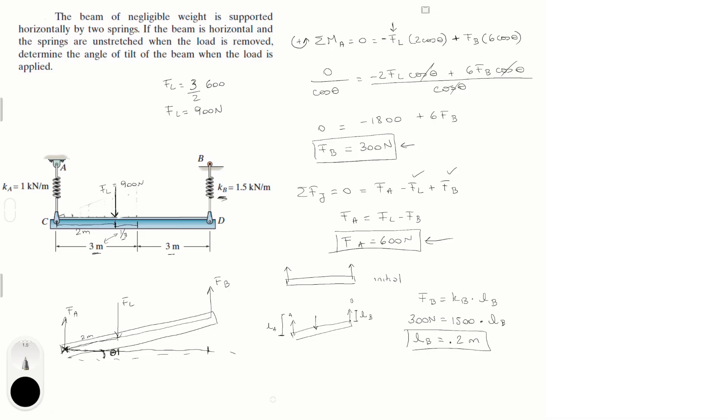And we're going to apply the same logic for F_A. F_A is equal to K_A times L_A. We know F_A to be 600. K_A is given by the problem at 1000 and L_A is what we're trying to find. If we solve for L_A, we get that this is equal to 0.6 meters.